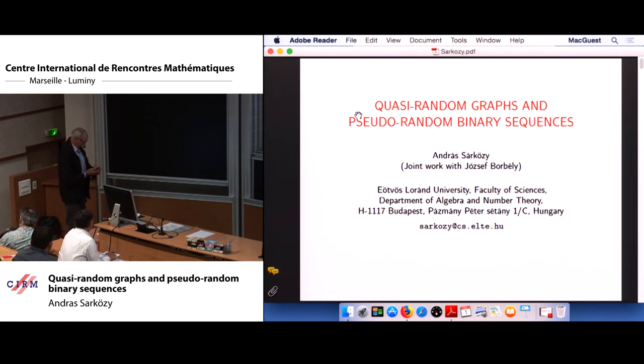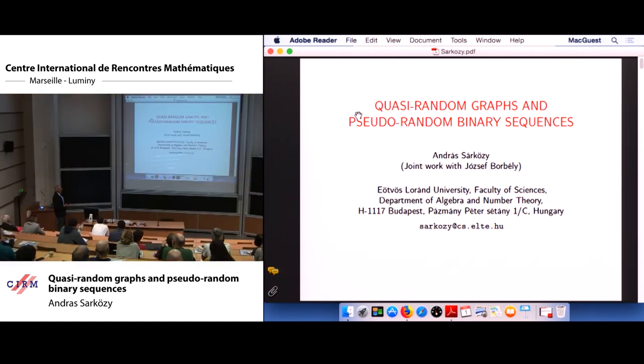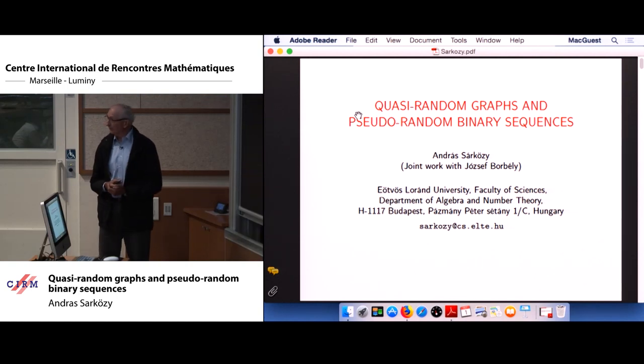As you see, I will speak on quasi-random graphs and pseudo-random binary sequences, the connection between the two. I will show that having binary sequences of good pseudo-random properties, one can give explicit constructions for so-called quasi-random graphs. All that I will speak about today is joint work with József Borbély, our paper is about to be submitted to Combinatorica.